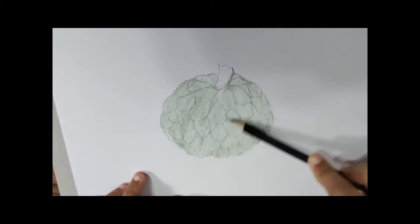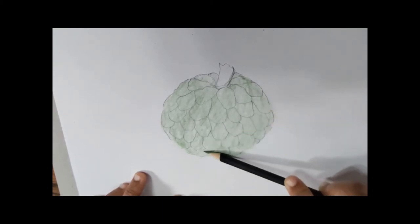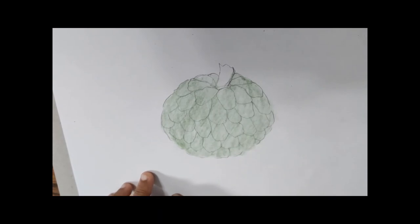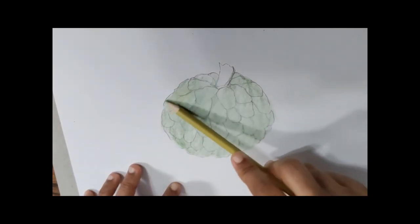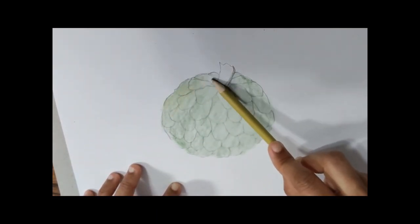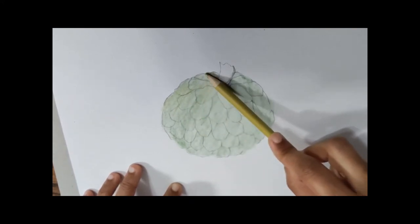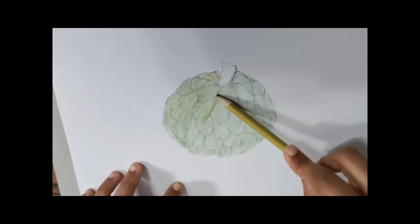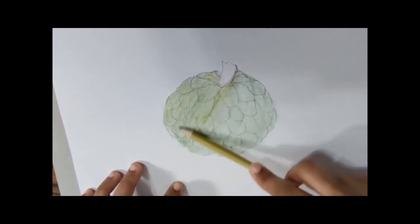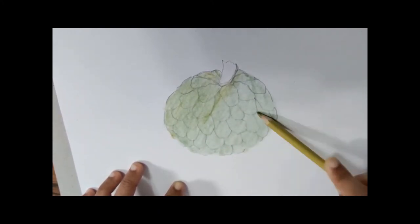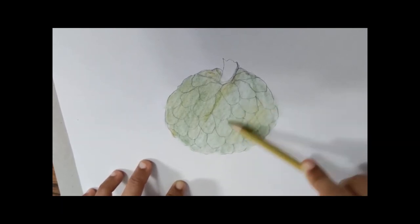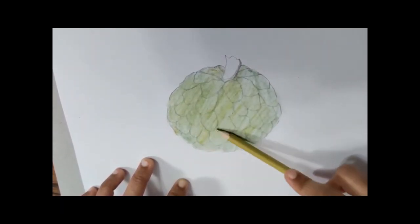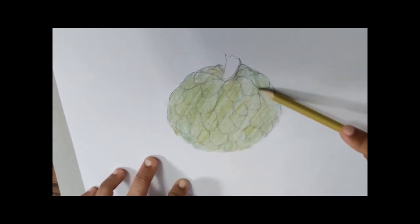Once you are done with your green color, now you are going to use yellow color in the same way how you did it with green color. You have to do it with yellow color also. Just color it lightly using your yellow pencil. Hold it in mid of the pencil and try to color it lightly.